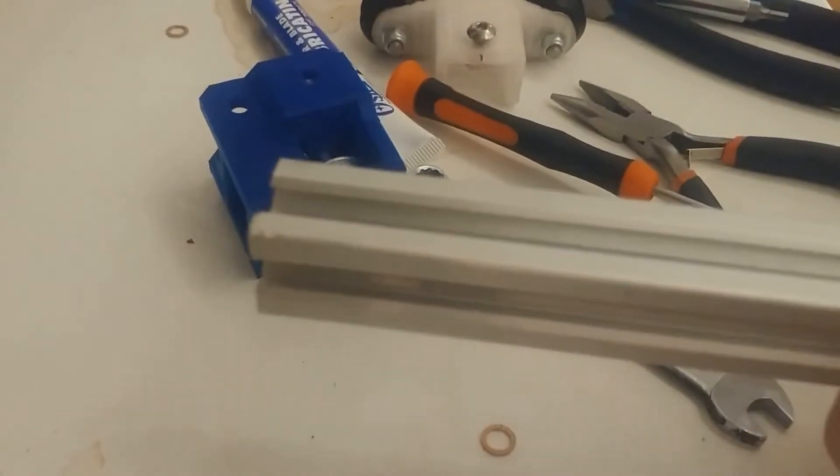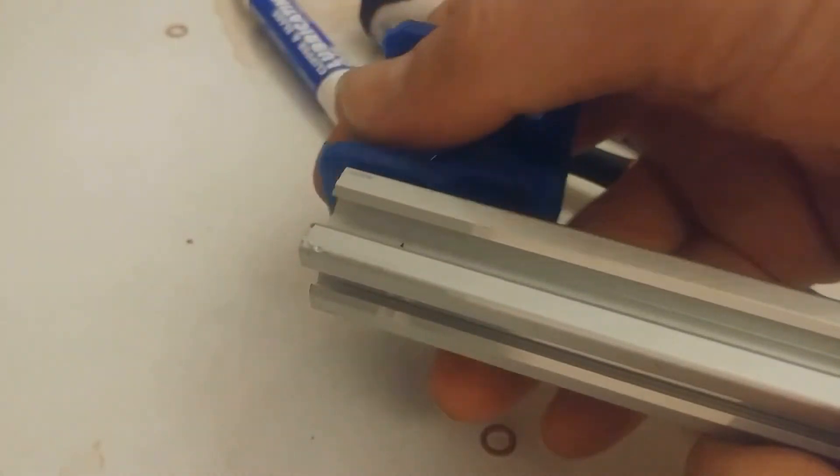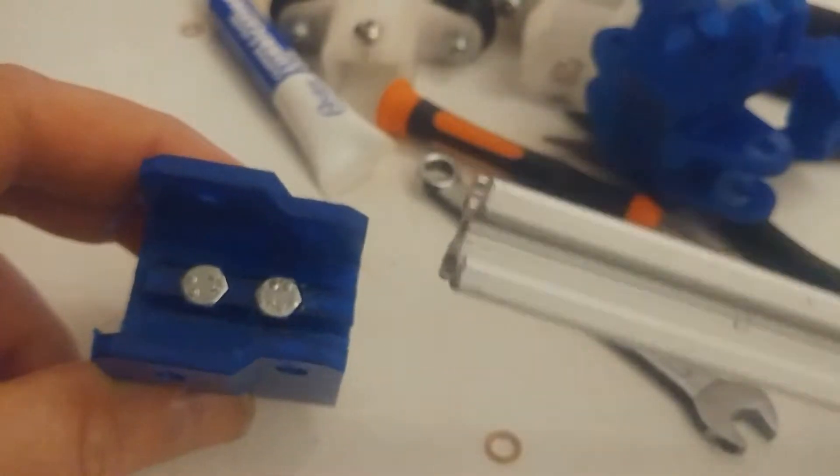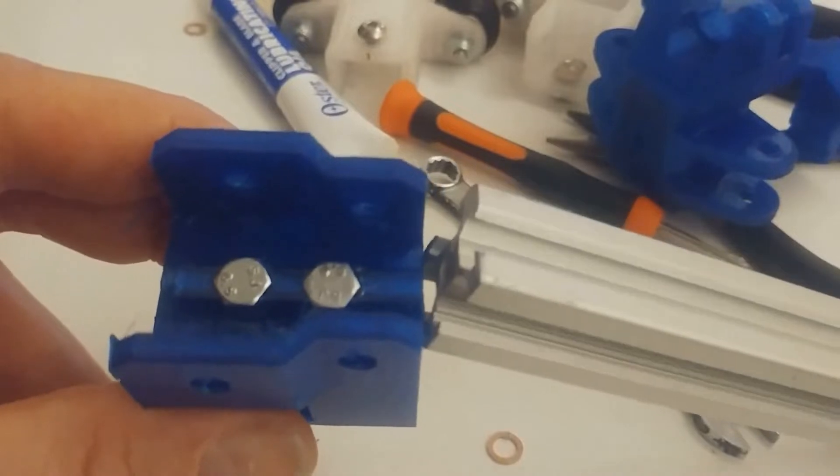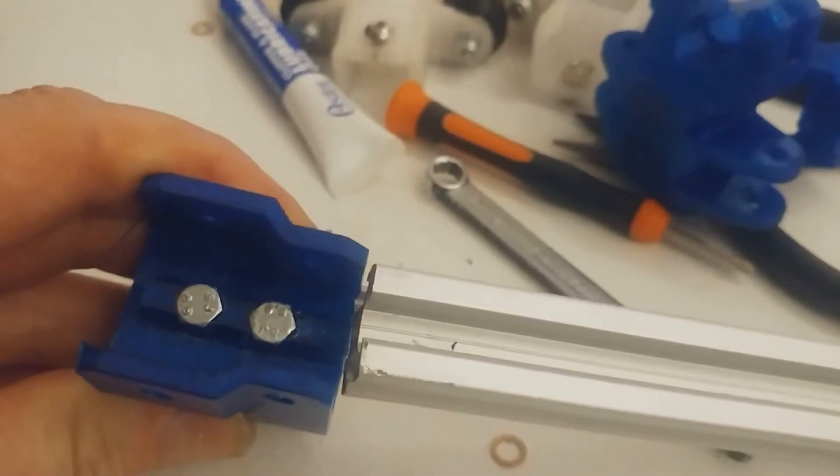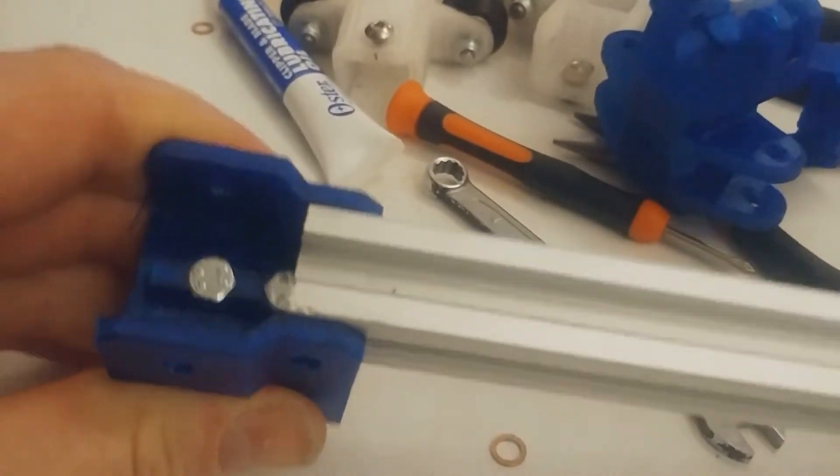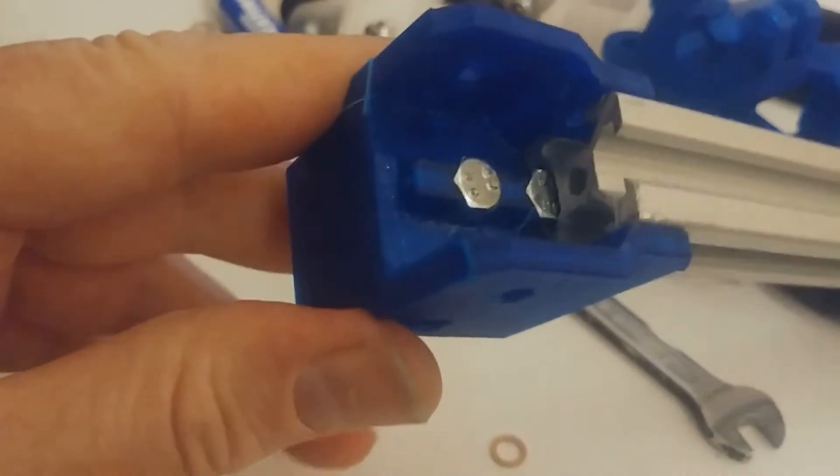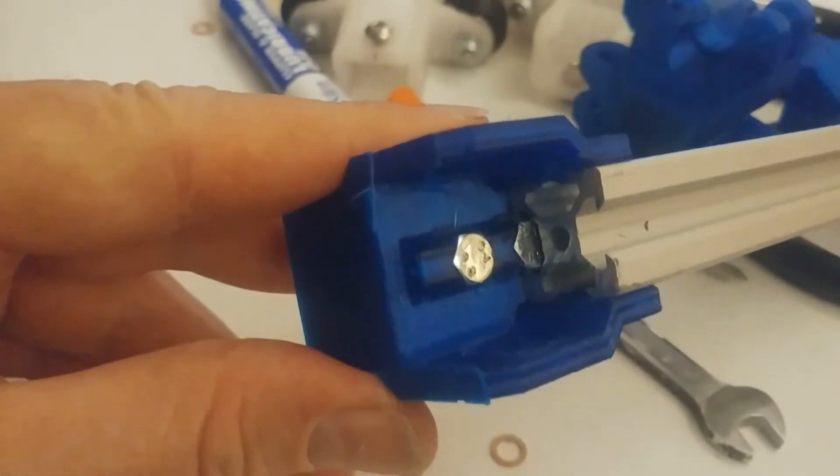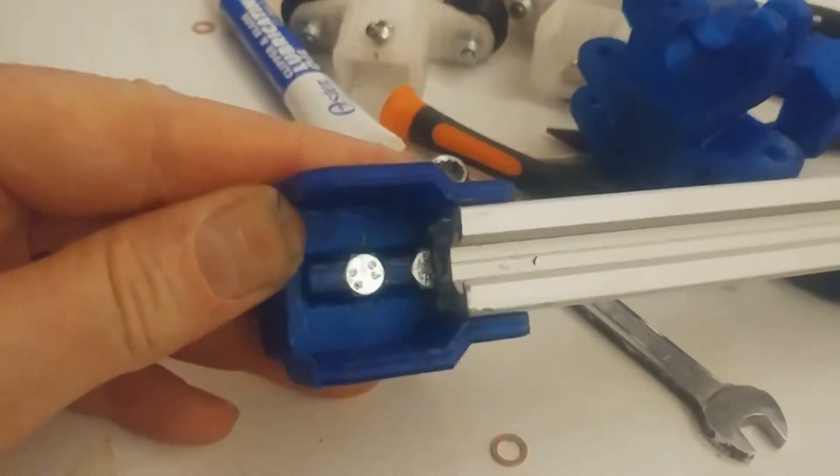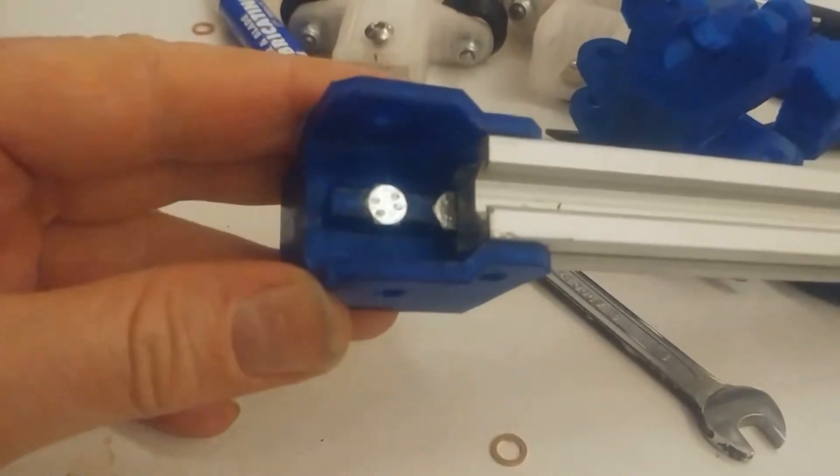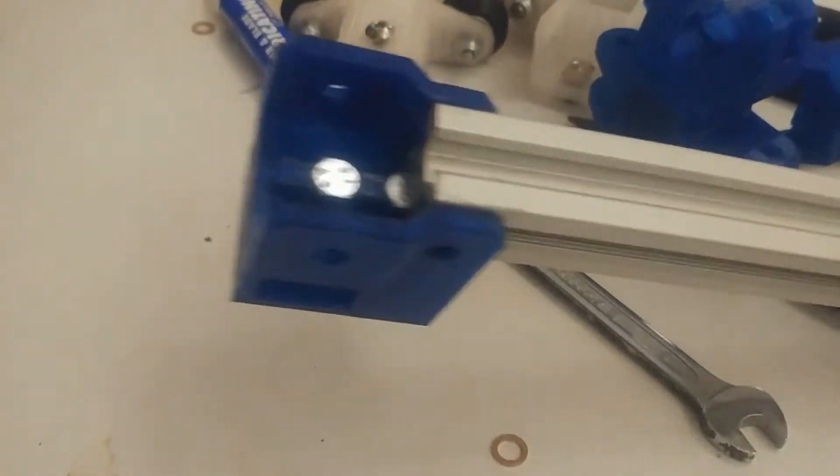The other brackets to the X-axis should go this way. You need to make sure the V-slot slides on here, so both bolts should be inside the V-slot. Let me just hit this a little.